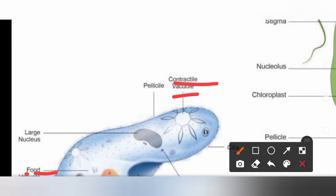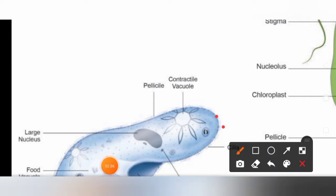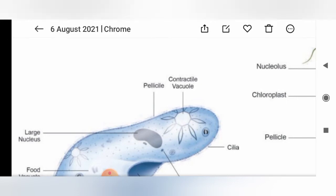So paramecium undergoes excretion, digestion, and locomotion. These small hair-like structures present at the ends are called cilia — C-I-L-I-A. So cilia is the locomotory organ of paramecium.